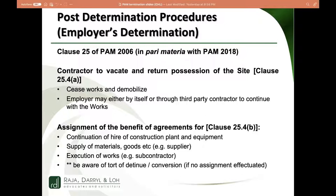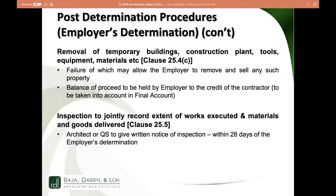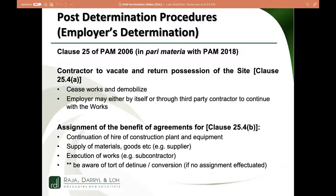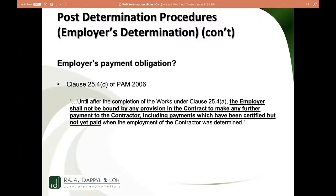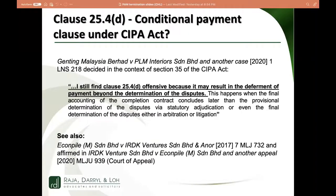In my view there is a difference between determination and termination — subtle it may be, but the use of the word 'determination' is obviously deliberate. The last point I will quickly make is that one of the most debated items in the PAM contract is the fact that once determination happens, it says the employer doesn't need to pay anymore. Cases have held this amounts to conditional payment under the CIPA Act and is therefore void. This issue hasn't gone all the way up yet, but PAM 2018 is trying to remedy that by narrowing the scope — only for amounts not yet certified does the employer not need to pay; whatever has been certified and is due should still be paid.